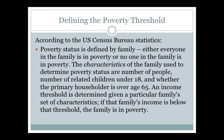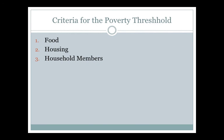We're not just looking at one or two people in the household, but rather everyone who exists in that family and whether their combined income may be considered underneath the poverty threshold. The poverty threshold is based on three criteria: the first is the cost of food, the second is housing, and the third is total household members.